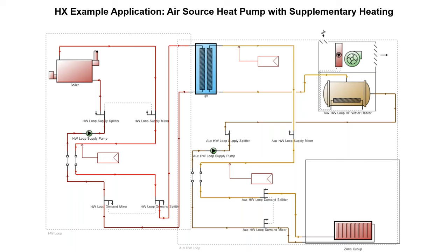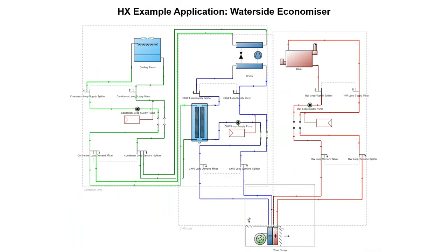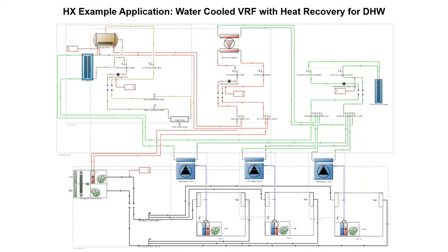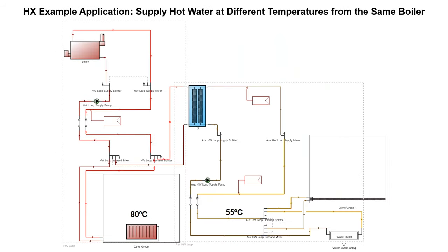Heat exchangers can also be treated as an EnergyPlus simulation artifact where in physical systems the loop connections might happen directly or via valves. When those connections are not directly connectable in EnergyPlus, a heat exchanger provides a way to connect those loops and transfer heat between them. Example applications include: an air source heat pump coupled with supplementary boiler heating; bypassing the chiller to use a condenser loop as a water-side economizer; water-cooled VRF with heat recovery for domestic hot water; and supplying hot water at different temperatures from the same boiler — which we will replicate.